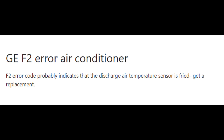Error code F2 means the discharge air temperature sensor is bad. If you see this error code, you need to change the discharge air temperature sensor on your GE air conditioner.